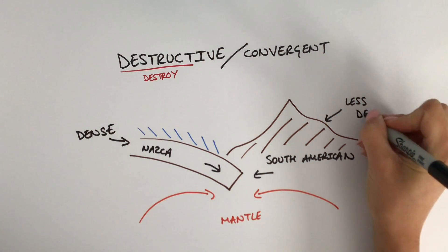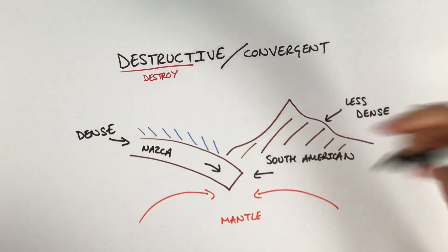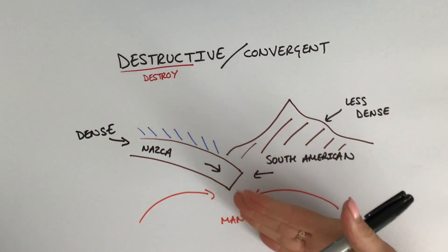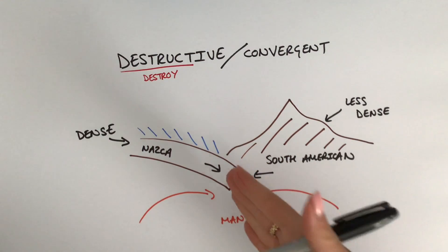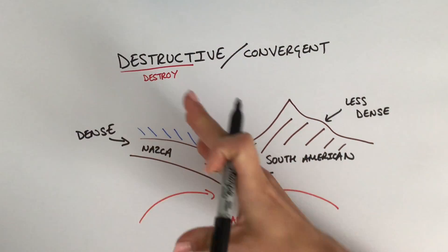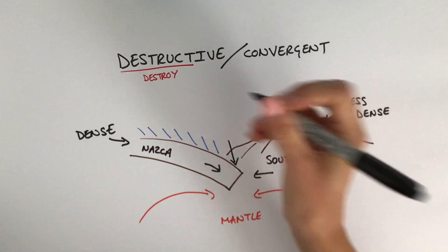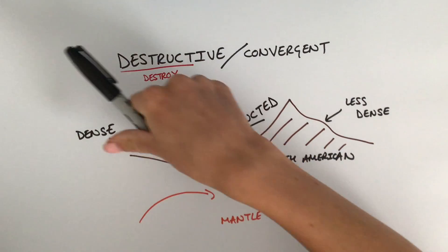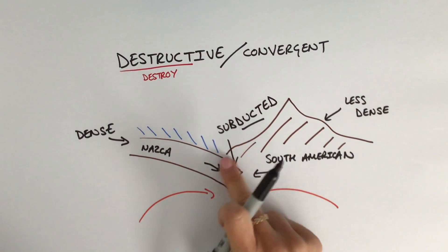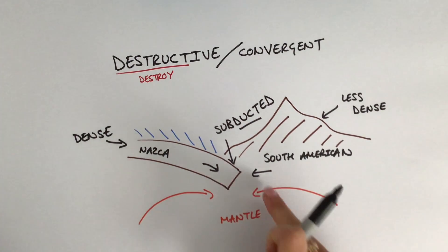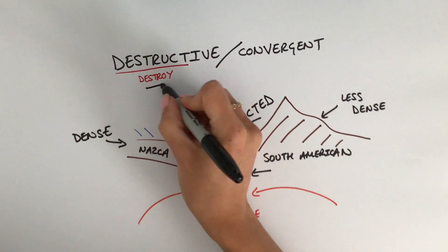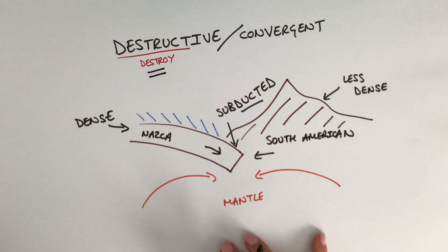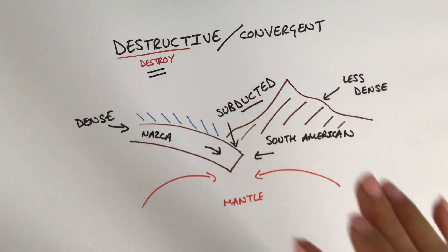When they come together, the oceanic crust is dense — really, really heavy — whereas the continental plate is less dense and lighter. So when they meet, the South American plate is light and the Nazca plate is really heavy, meaning the Nazca plate is drawn down below the South American plate. When it is drawn down toward the mantle, we call this a subduction point — the plate is being subducted, meaning it's being dragged down, warmed up, and ultimately destroyed, hence this being called a destructive plate boundary.